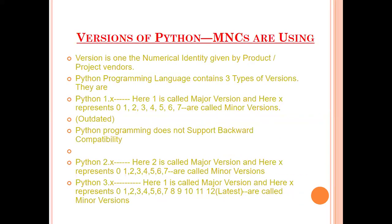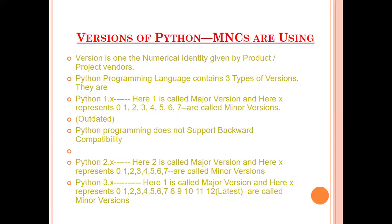Now let's talk about versions of Python. Version means numerical identity. We have three major series: 1.x, 2.x, and 3.x. Whatever comes before the decimal point is the major version and whatever comes after is the minor version — for example 1.1, 1.2, 1.3. Python 1.x is the outdated version and Python does not support backwards compatibility. Some companies are still using Python 2.x. The currently popular series is 3.x.